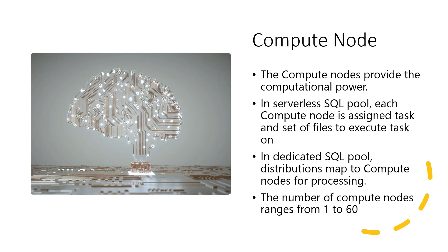The second type of node is the compute node — these are the workhorses that provide the computational power. In a serverless SQL pool, each compute node is assigned a task and a set of files on which it has to execute, as assigned by the controller node. Similarly, in the dedicated SQL pool, distributions map to compute nodes for processing. Whether it is a dedicated pool or serverless pool, distribution always happens on the compute nodes, enabling parallel execution. The number of compute nodes can range from 1 to 60.